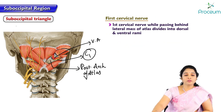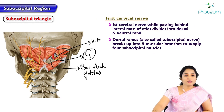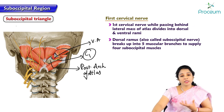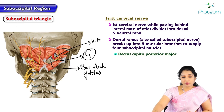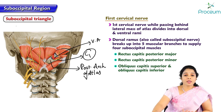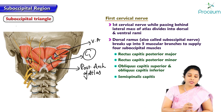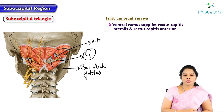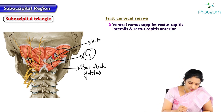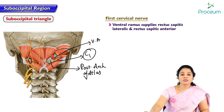The first cervical nerve, while passing behind the lateral mass of the atlas, divides into dorsal and ventral ramus. The dorsal ramus, otherwise called the suboccipital nerve, breaks up immediately into five muscular branches to innervate the four suboccipital muscles — rectus capitis posterior major, rectus capitis posterior minor, obliquus capitis superior, and obliquus capitis inferior — and also supplies semispinalis capitis. Here in this image we can see the dorsal ramus of C1 splitting into five terminal branches. The ventral ramus supplies rectus capitis lateralis and rectus capitis anterior muscles. With this we complete the suboccipital triangle.